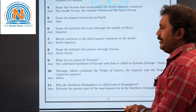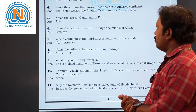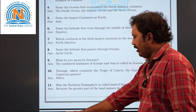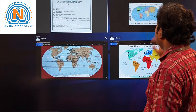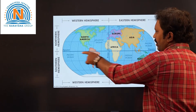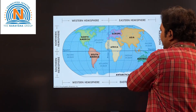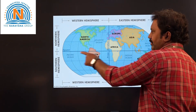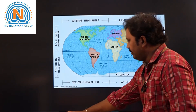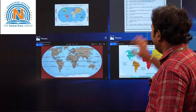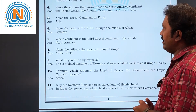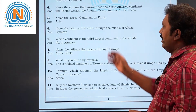Now the sixth question: name the latitude that runs through the middle of Africa. See here — this is Africa, and a latitude is passing through the middle. What is this, children? Yes, that is the Equator. So the answer is the Equator.